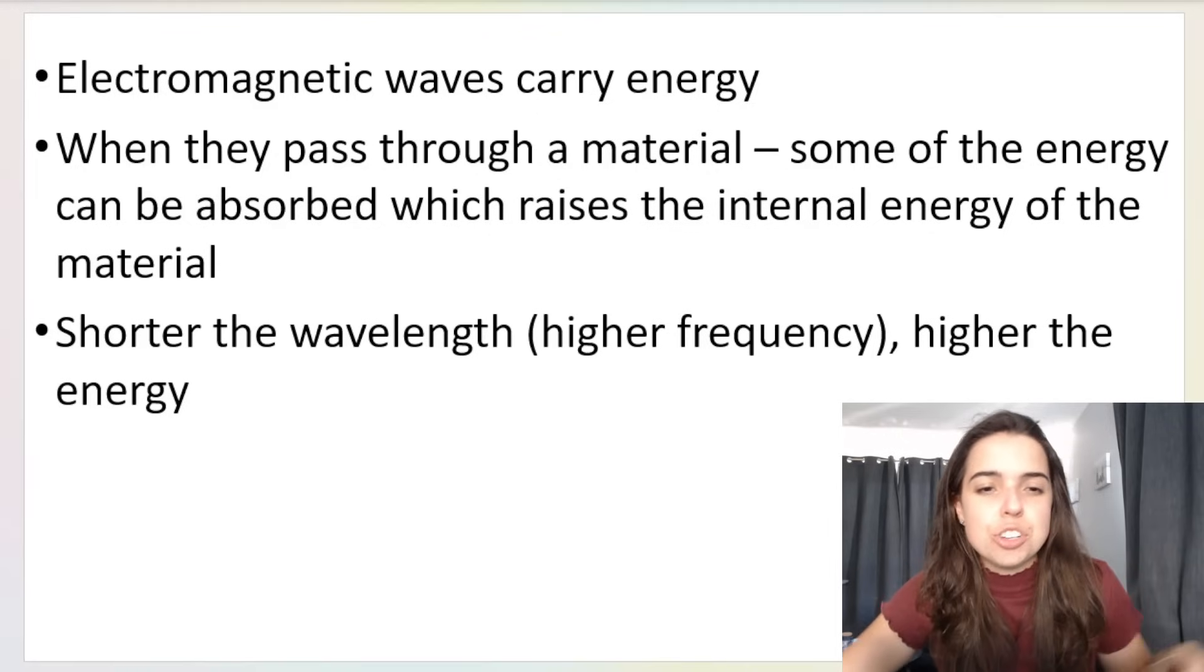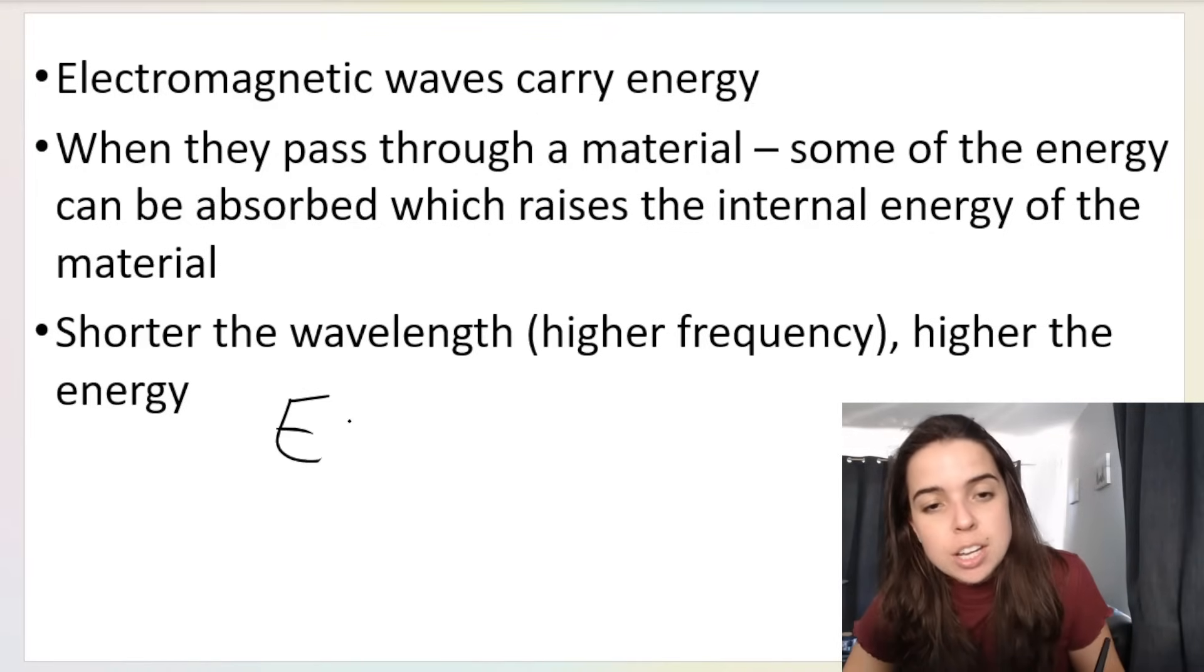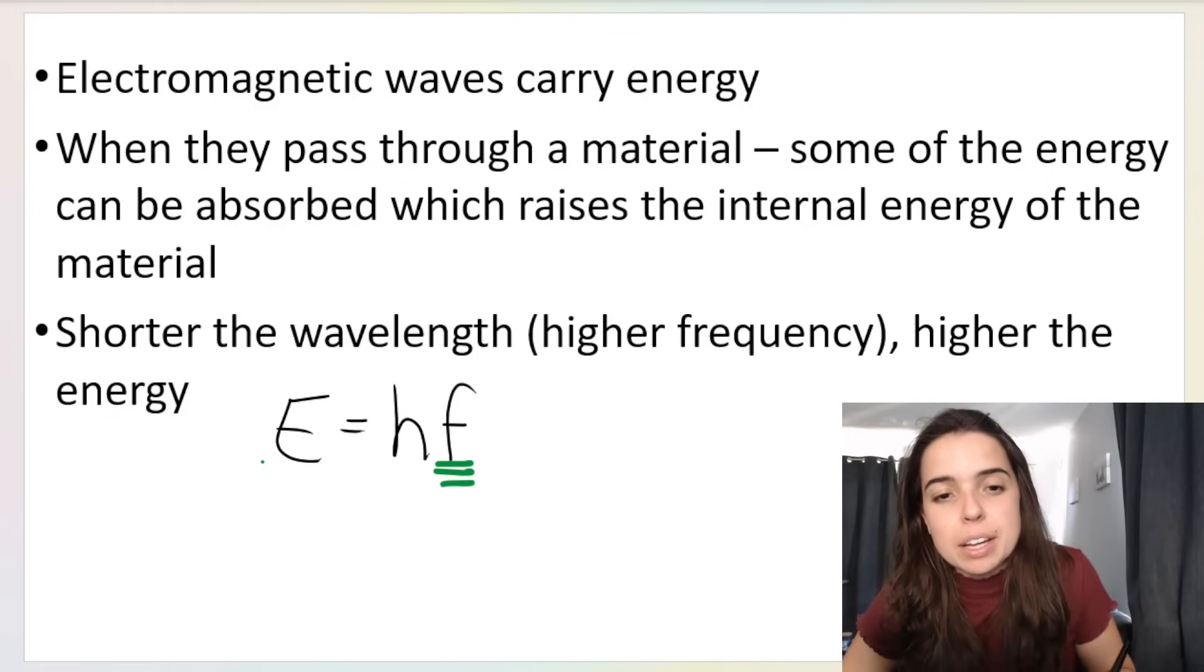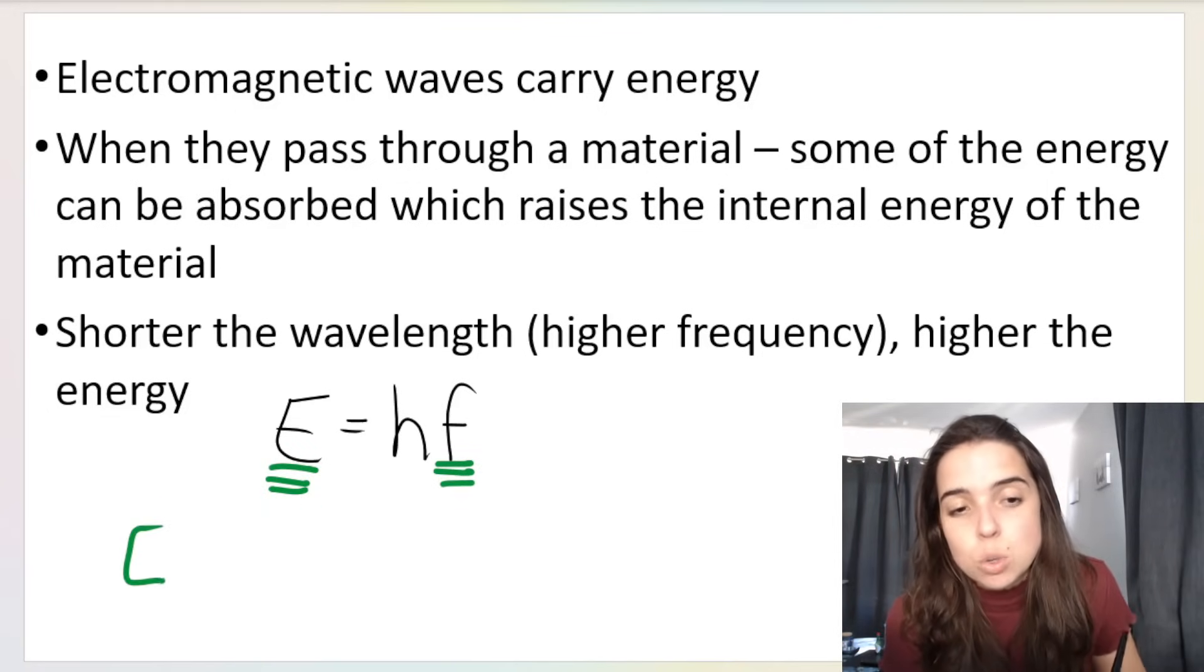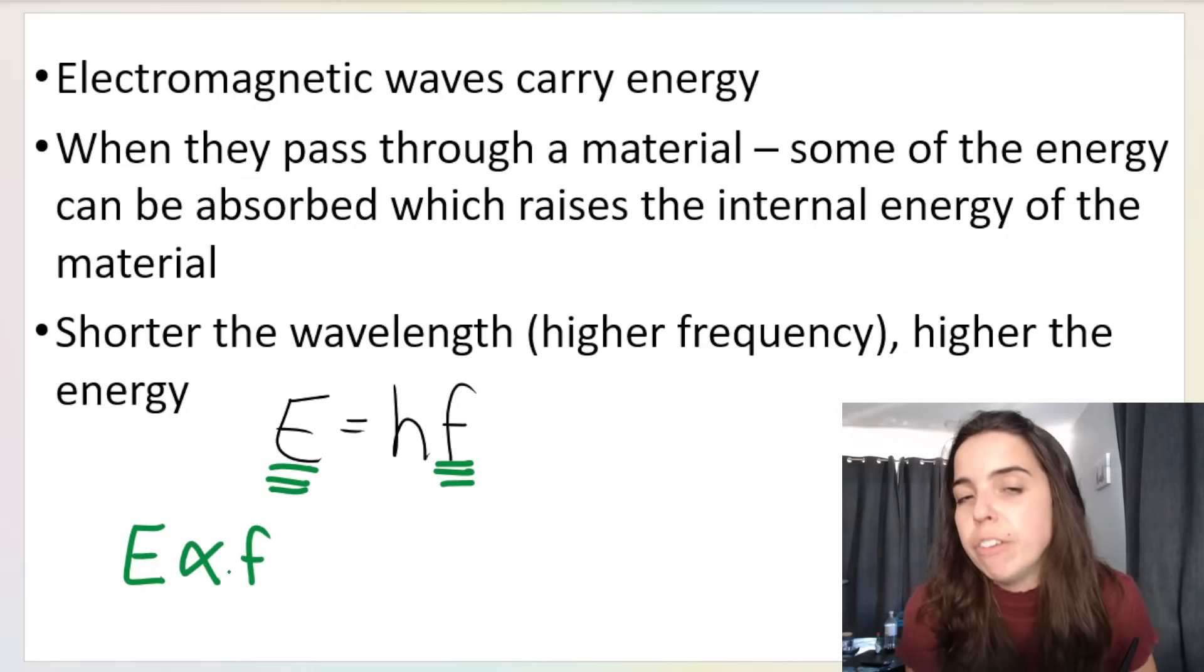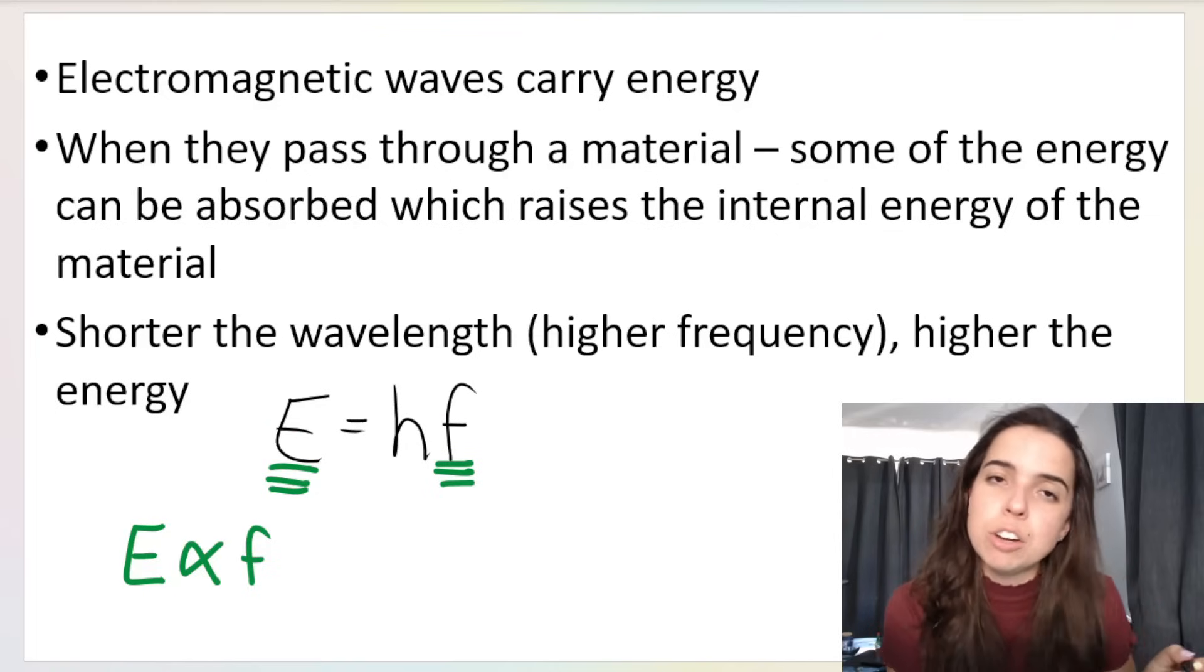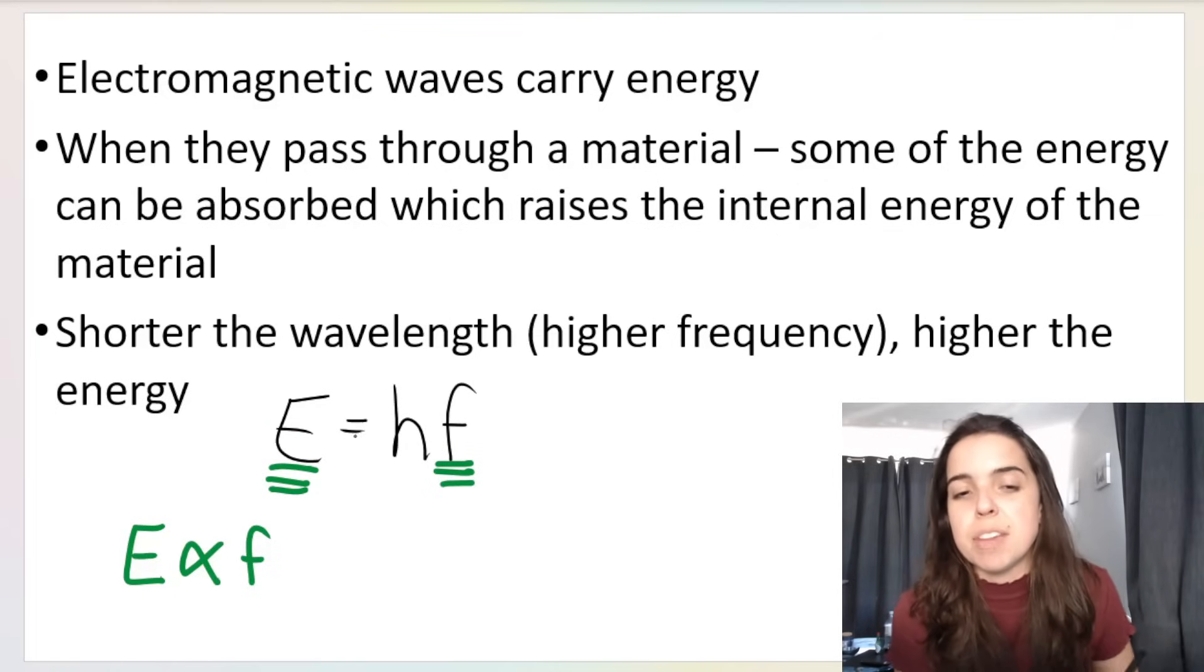So, remember that formula that I just showed you? E, energy, is equal to HF. What that means is that if frequency gets bigger, E gets bigger. What relationship is that called again? That's called directly proportional. That symbol is used for directly proportional. It means that if F doubles, E doubles. If F gets three times bigger, E gets three times bigger. That's what a direct proportion relationship is. If F halves, E will half. So, they increase or decrease by the same proportion. They match one another in that way.